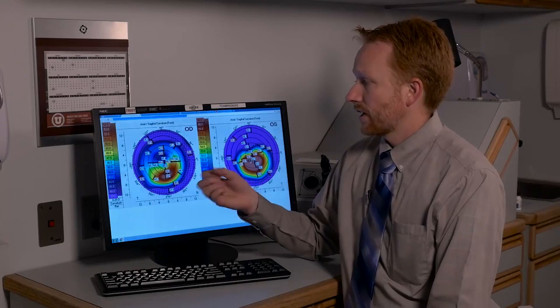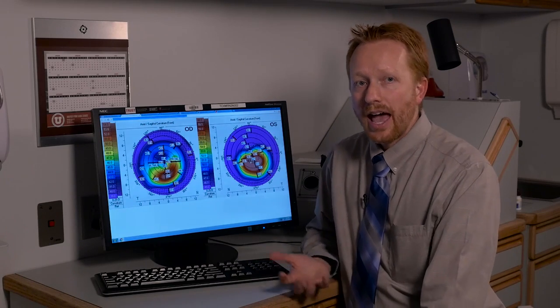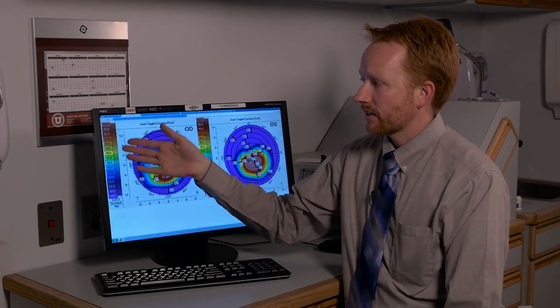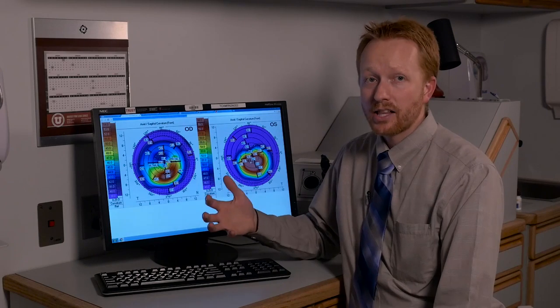For example, here we have an image of the right and the left eye. This is an axial image of the front surface of the cornea. As you can see there's a scale here that shows the relative curvatures of the cornea from flat to steep. The steeper numbers tend to be represented in reds and yellows and the flatter numbers tend to be in blues and purples.